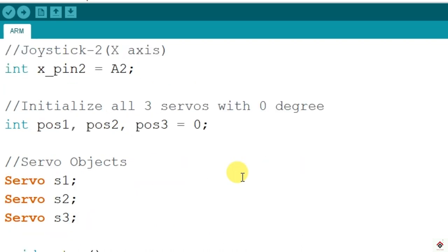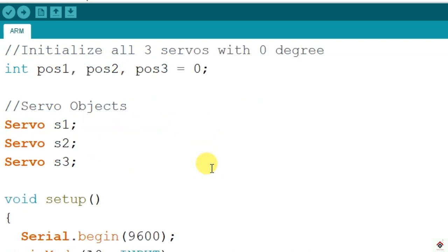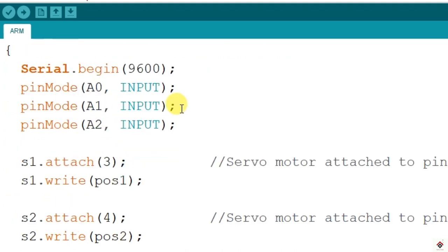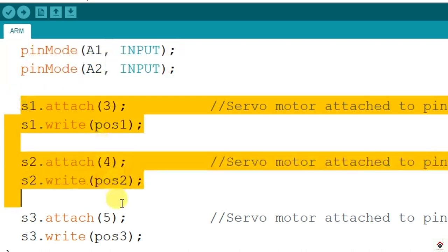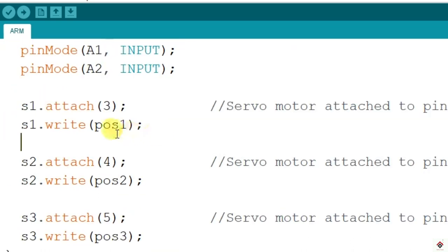So by default we'll keep all the servo shafts at zero degree. So I have declared three positions and initialized with zero. And we have to declare three servo objects. So in the setup I have declared the input and output devices and by default I have made all three servo shafts to zero degree.